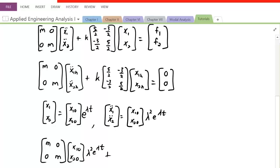This is added with K, constant K times the matrix, 5 halves, negative 3 over 2, negative 3 over 2, and 5 over 2. The X1 and X2 are replaced with the X1 0 and X2 0, e to the lambda t. So X1 0, X2 0, e to the lambda t.